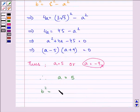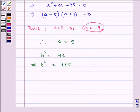So b square will be equal to 4a. So it will be equal to 4 times 5, that is equal to 20.